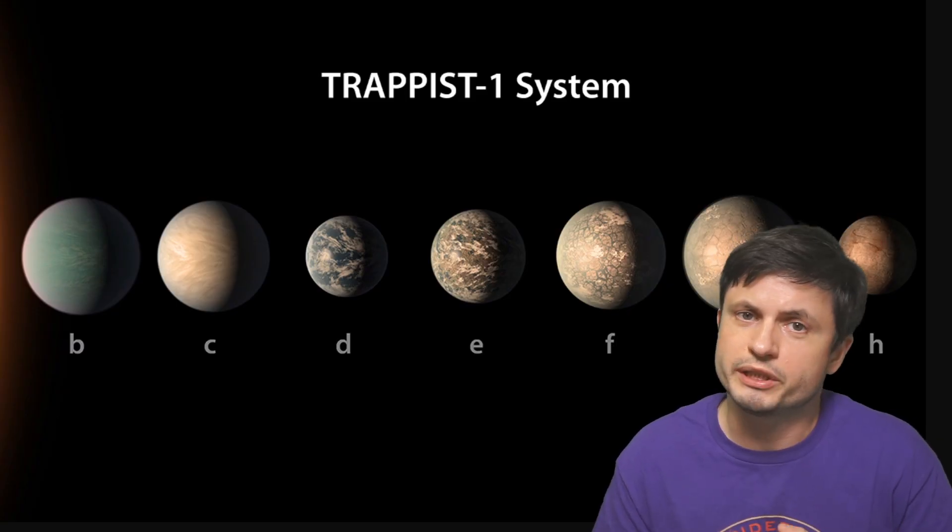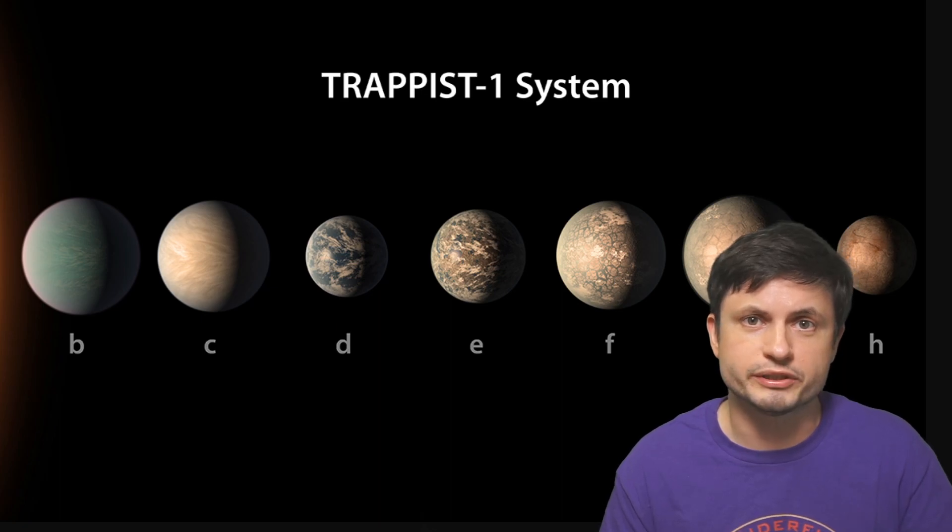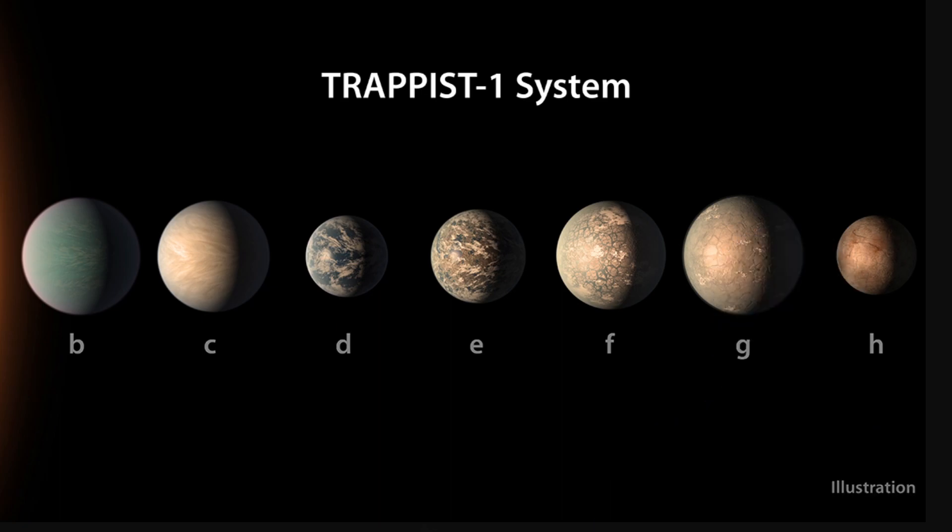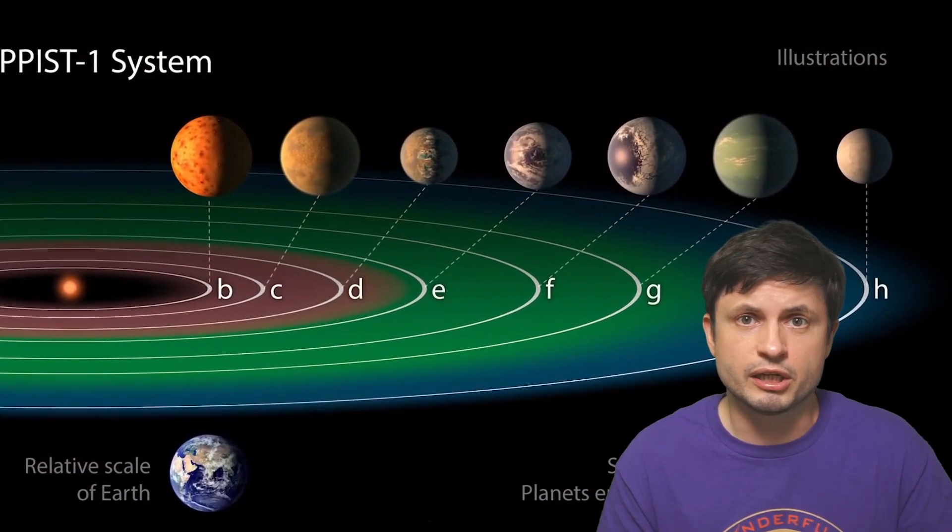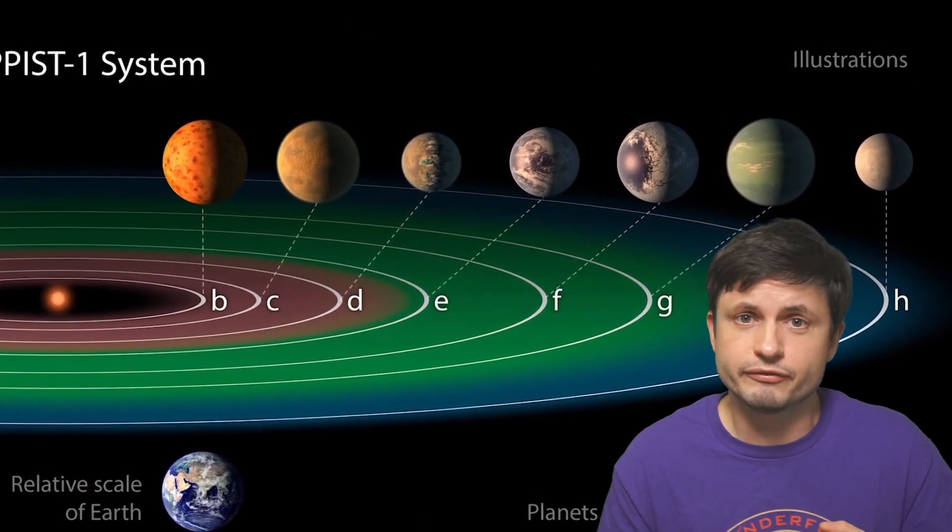For example, if we take a look at the iconic TRAPPIST-1 system and the terrestrial planets discovered here, are we going to be discovering planets with relatively similar minerals and composition, or are they going to be entirely different and something that we can't even imagine right now?